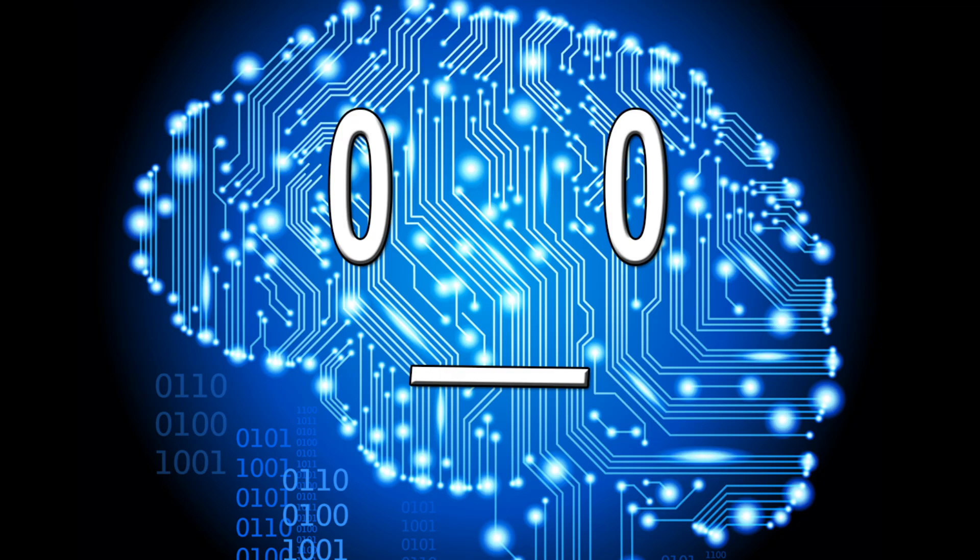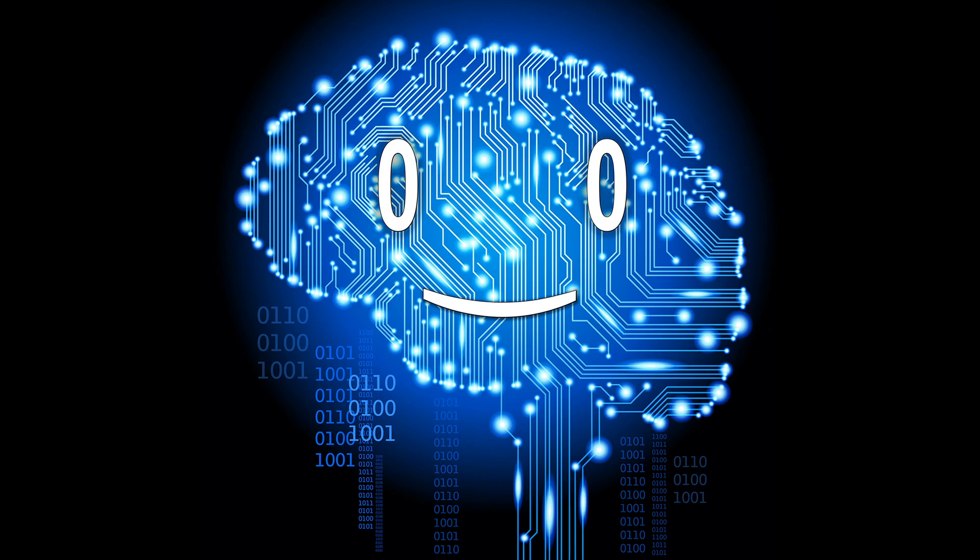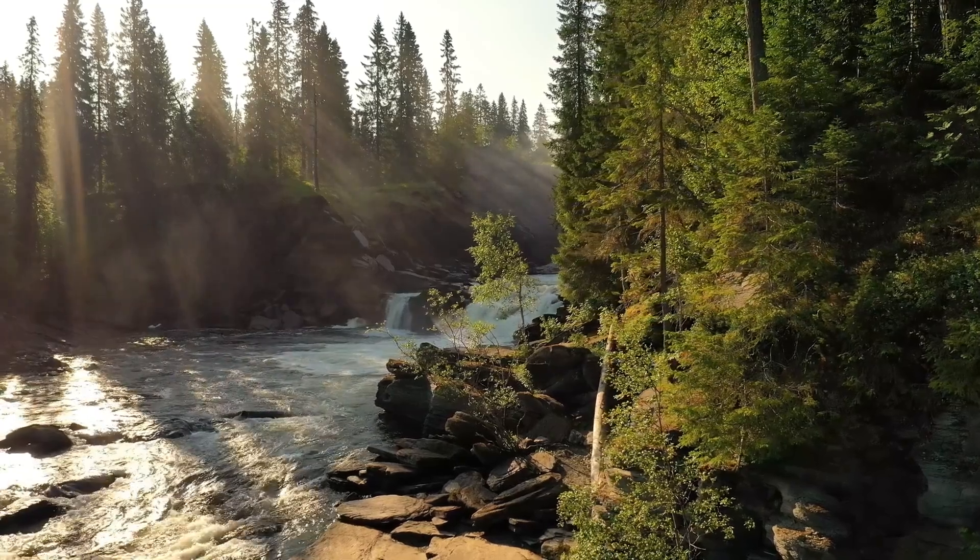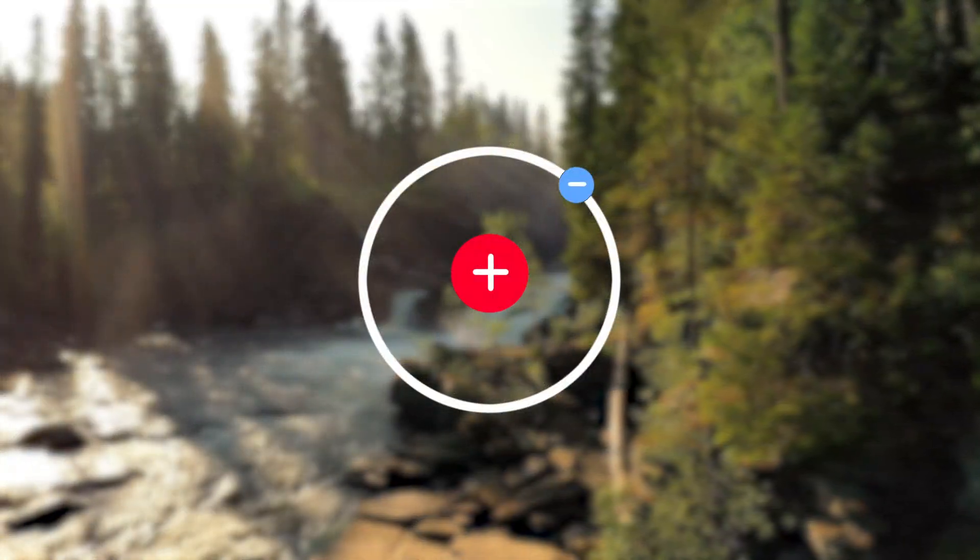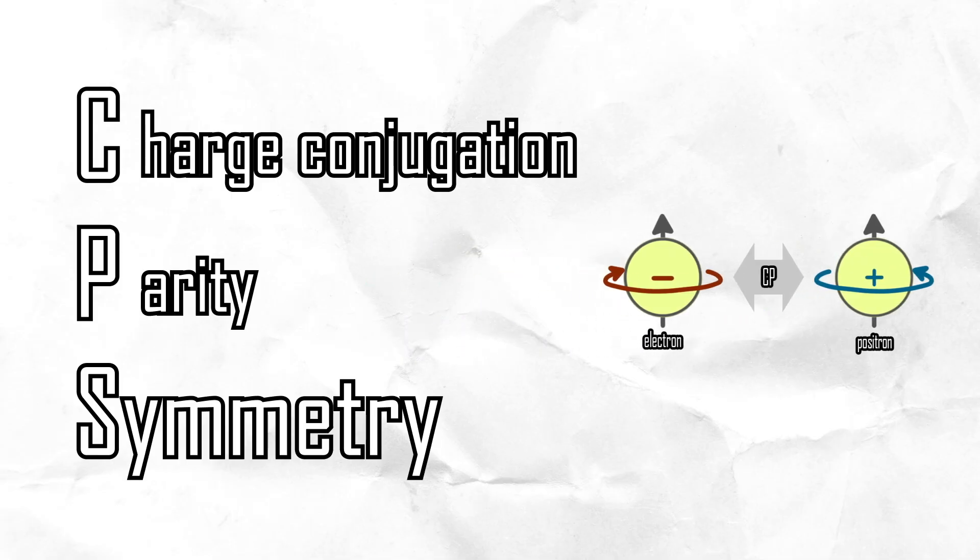And before FBI agents knock on my door, I should explain what it means. CP symmetry states that the laws of physics should be the same if a particle is interchanged with its antiparticle. It stands for charge conjugation and parity symmetry.